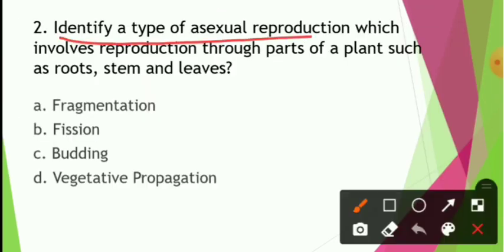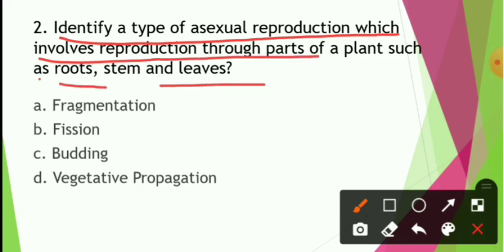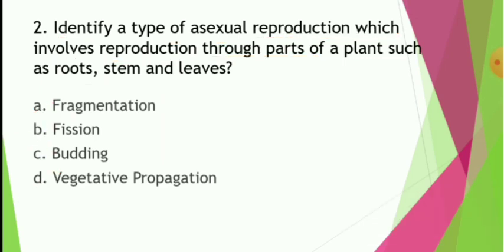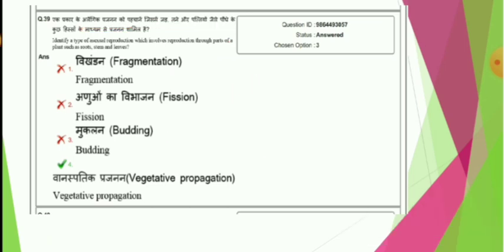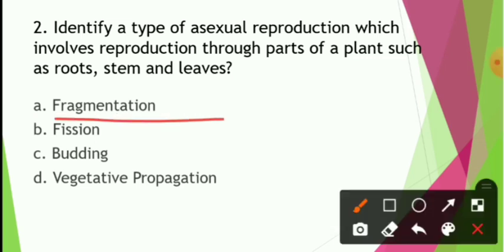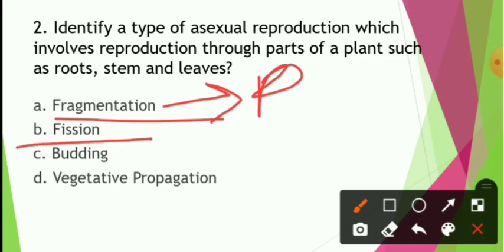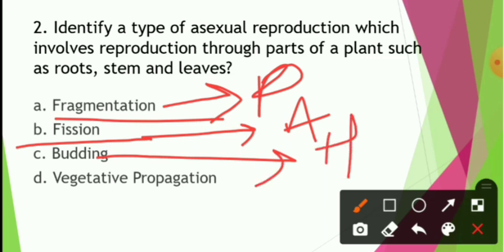Next question: Identify a type of asexual reproduction which involves reproduction through parts of plants such as root, stem, and leaves. The options are fragmentation, fission, budding, or vegetative propagation. Fragmentation occurs in planaria; binary fission occurs in amoeba; budding occurs in hydra; and vegetative propagation involves root, stem, and leaves. So the answer is vegetative propagation.